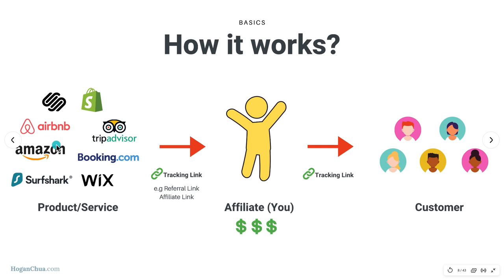For example, Amazon has an affiliate program called Amazon Associates where you can join and promote all the products on Amazon. Let's say you want to promote a coffee machine — you sign up, and they give you a special tracking link, also known as a referral link or affiliate link. That link adds a cookie or virtual tag so Amazon knows when a customer purchases that you referred them, and then Amazon pays you the commission. If the coffee machine is $500 with a ten percent commission, you earn $50.